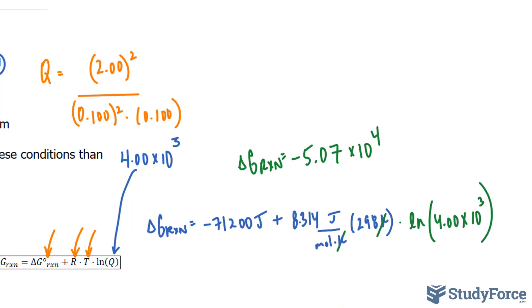This reaction is spontaneous. As you can see, there's a minus in front of the number under these new conditions. But it's less spontaneous than what we had originally. Notice originally we had negative 71.2 kilojoules. This one is negative 50.7 kilojoules. The more negative it is, the more spontaneous it is.